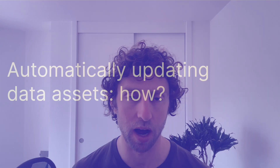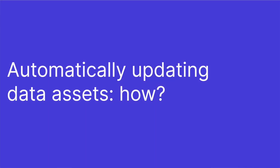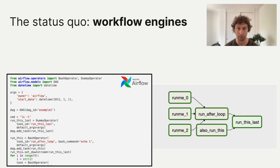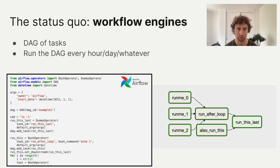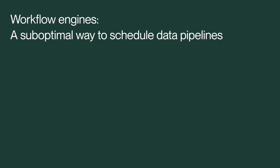So there's a set of situations where we want to automatically update our data assets. If you look at the last couple of decades, the answer you'll probably end up with is a workflow engine. Workflow engines are systems that take responsibility for executing a set of tasks in the right order. Airflow, shown here, is a very popular one — the way it works is you define a DAG and can put that DAG on a schedule. This seems like a reasonable way to schedule data pipelines, but there are some big problems which have personally caused me much anguish in my years as a data engineer.